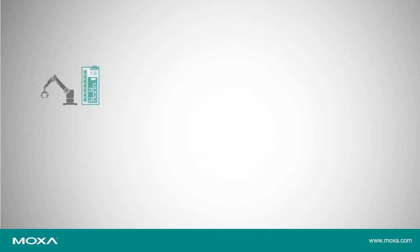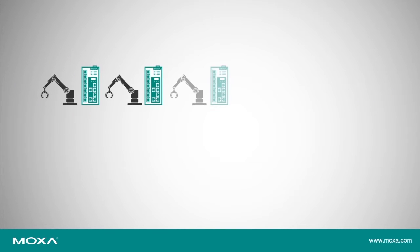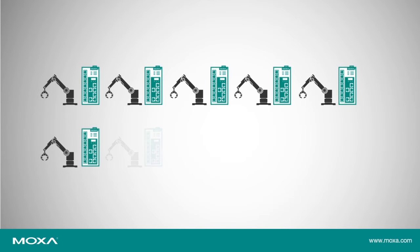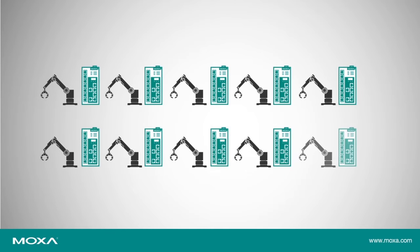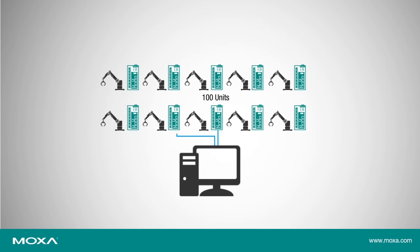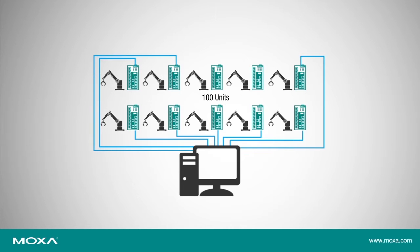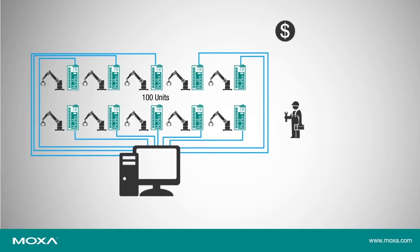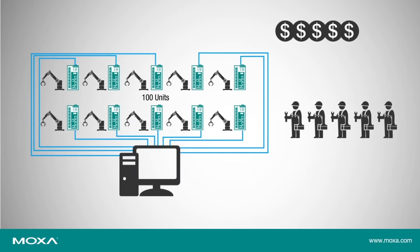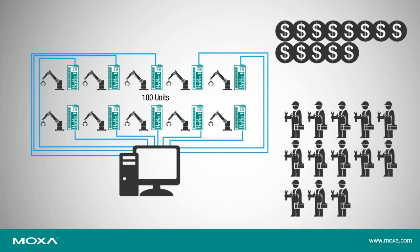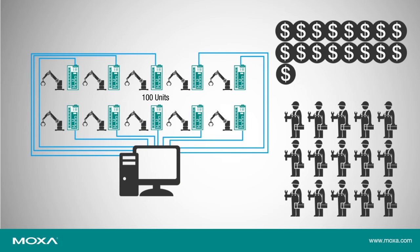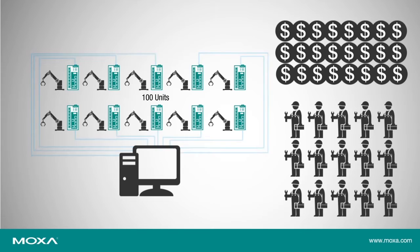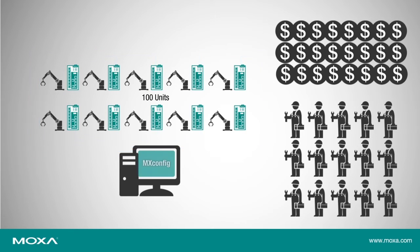Let's look at an example of how Moxa can lower the TCO for your networking projects. Let's say you're building a factory network for 100 machines. Apart from the cost of equipment, you also need to spend time setting up and configuring the equipment before you can go online. Setting up each piece of equipment one at a time can take an excessive amount of time, with the increased labor cost having a big effect on your TCO.